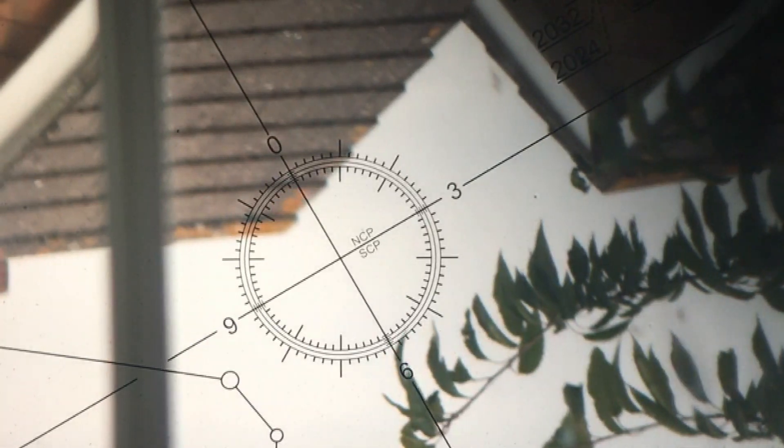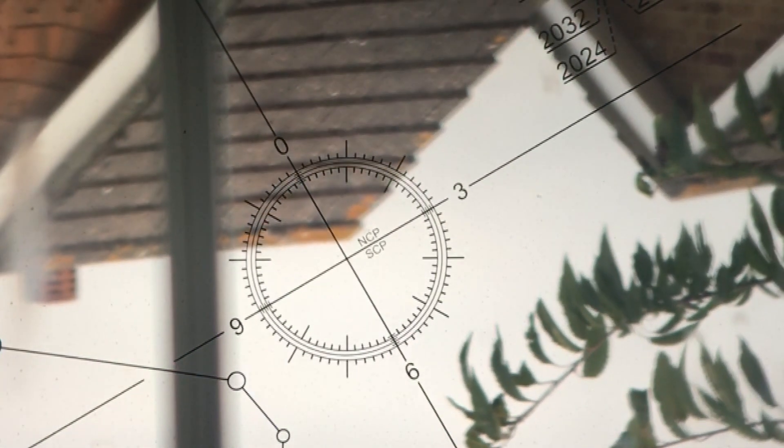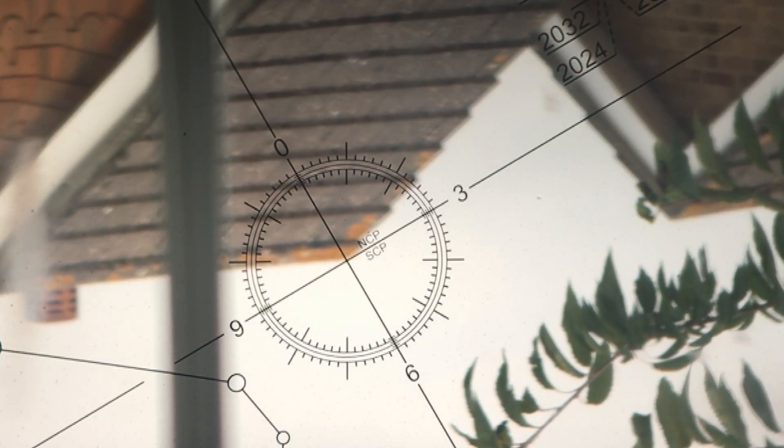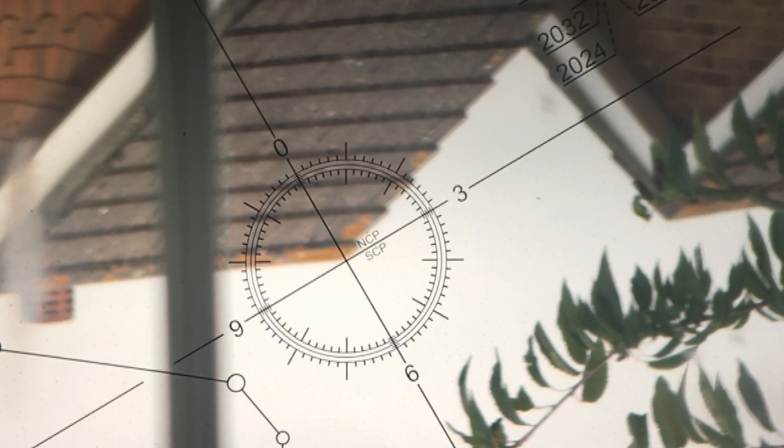So now here's the view through the graticule and you can see the corner of somebody's roof. Note that the image is inverted. I'm adjusting the altitude and azimuth bolts to get the crosshair right on the corner of that roof and then locking them off.